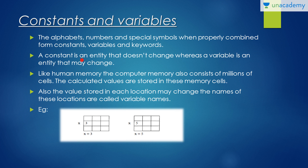You are all aware of what a constant is in mathematical language. Like human memory, computer memory also consists of millions of cells. The calculated values are stored in these memory cells, which are also called memory locations. The values stored in each location may change, so these are called variable names — variable means changeable.